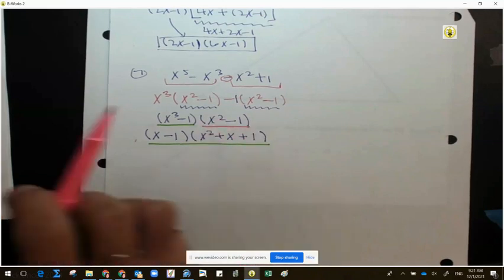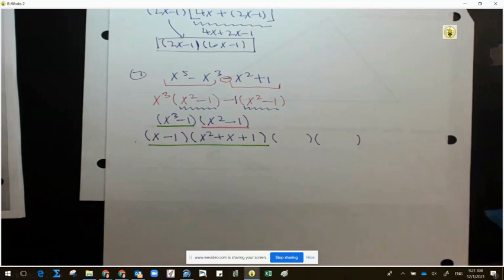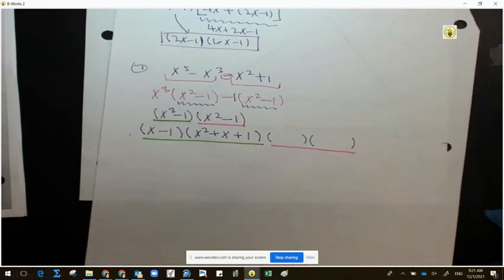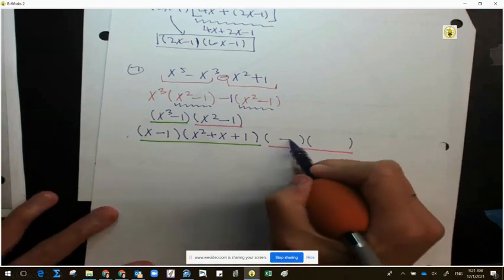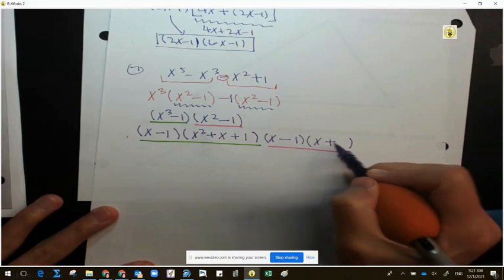So then on my pink, I'm going to do difference of two squares. So the rule for difference of two squares is one's a minus, one's a plus. Which one comes first? It doesn't matter. So we have a minus and a plus. So we take x and 1, x and 1.